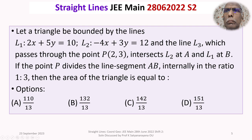A triangle is formed by three lines: L1 whose equation is 2x plus 5y equals 10, L2 whose equation is minus 4x plus 3y equals 12, and line L3. The equation of L3 is not given, but conditions are given: L3 passes through the point P with coordinates (2, 3), L3 intersects L2 at A, and L3 intersects L1 at B. We are required to find the area of triangle ABC.